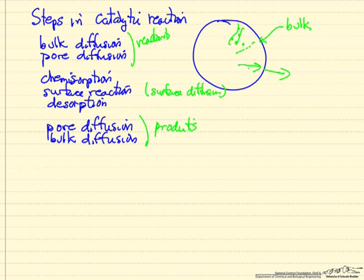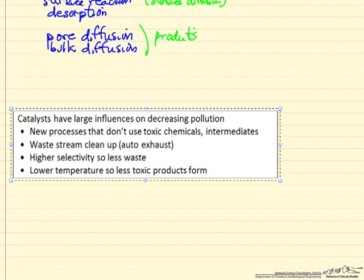So catalysts are used on large scale. Most chemicals that are produced involve catalysts. Gasoline production sees a number of catalysts, and catalysts are used to clean up waste streams such as in the auto exhaust catalysts. If we can create catalysts with higher selectivity, then we create less waste. If we can create catalysts that operate at lower temperatures because they are more active, then we could create less toxic products that might form at the higher temperatures as byproduct reactions. And clearly catalysts are used on large scale. Most of them are heterogeneous catalysts.